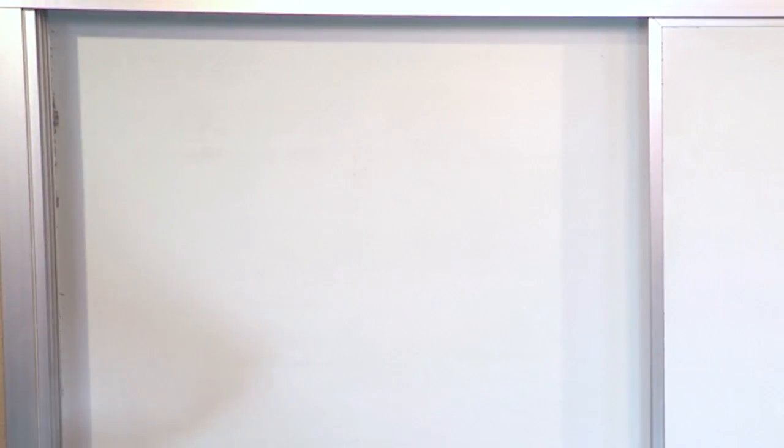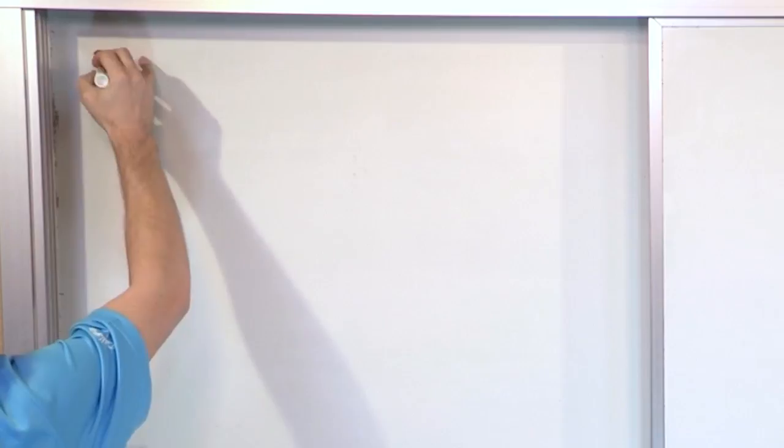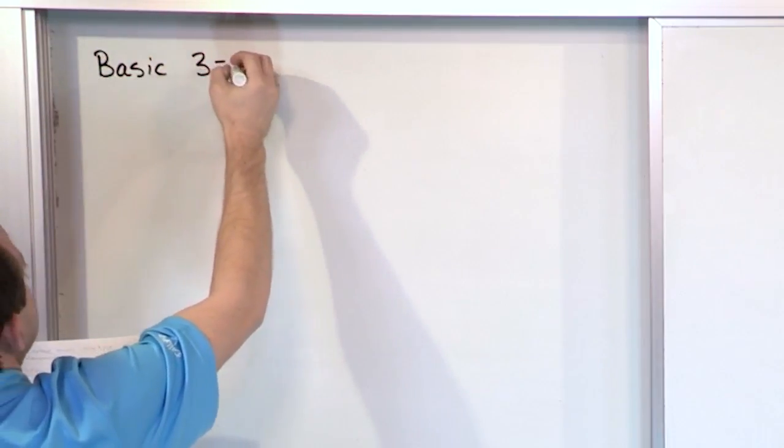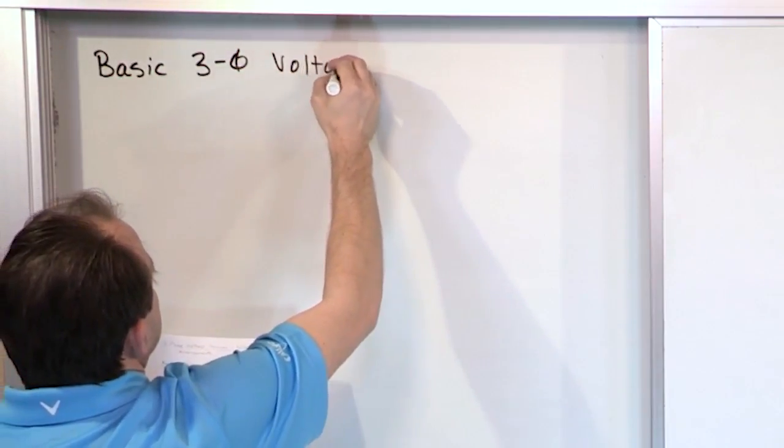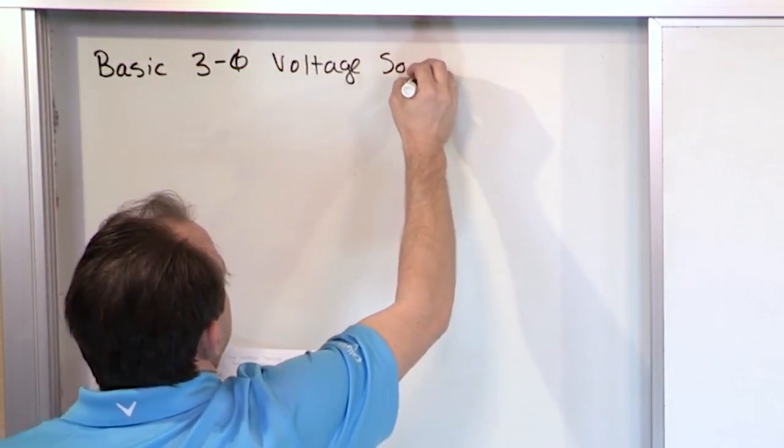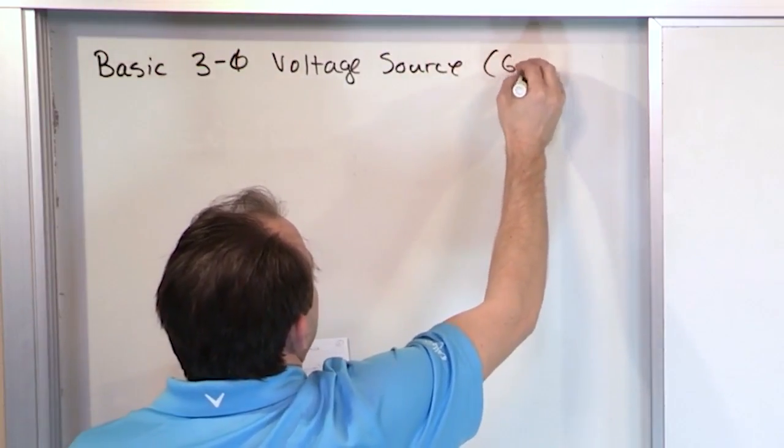So the first thing I want to do, my roadmap here, is I want to explain what a basic three-phase voltage source looks like. And we're going to first talk about the Y configuration. You'll find that there's Y and there's Delta. It's just two different ways of wiring up three-phase circuits, essentially. So I hope I don't mangle this drawing because it's kind of a complicated-looking drawing. What we want to do is look at a basic three-phase voltage source generator.